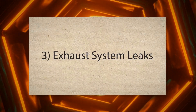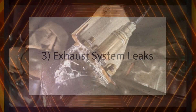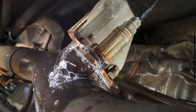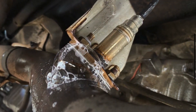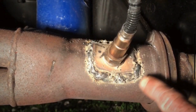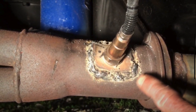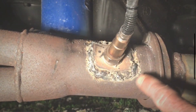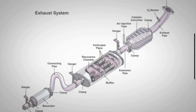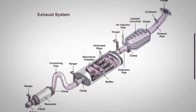3. Exhaust System Leaks: Any leaks in the exhaust system before the oxygen sensor can introduce additional oxygen into the exhaust stream. This extra oxygen can cause the sensor to produce readings that are outside of the expected range, resulting in a fault code like PO-141.